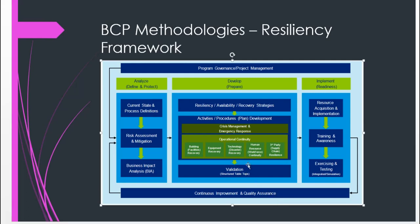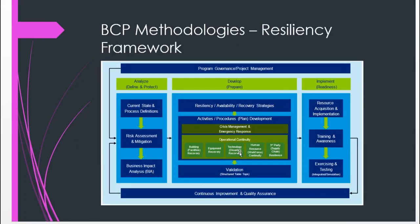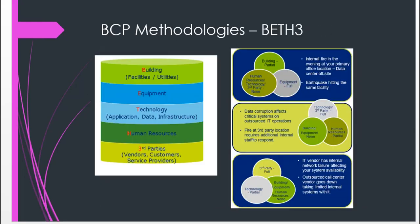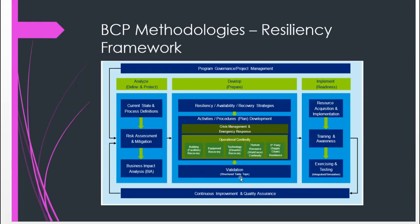The operational continuity part is covered under the BCRT3 methodology, which is basically an expansion of the resilience framework. The tabletop exercise is an expansion of the validation stage, where people sit down, discuss, and look at different scenarios which may lead to the evolution of the continuity plan.